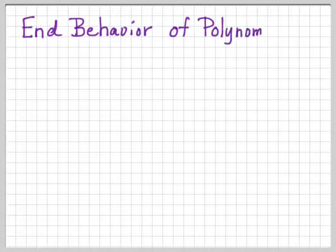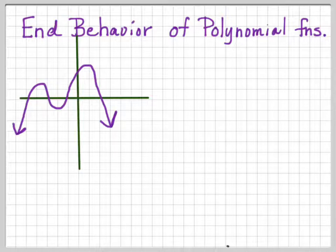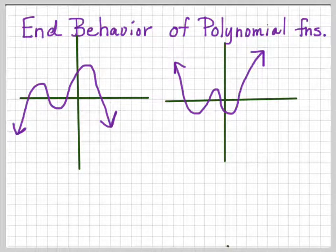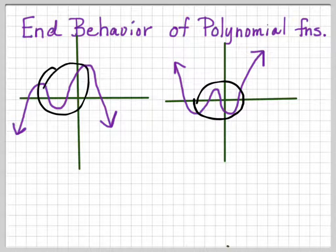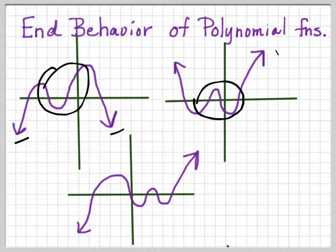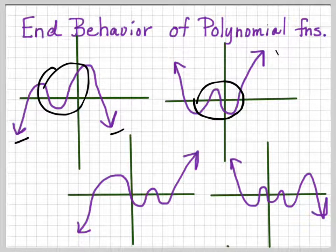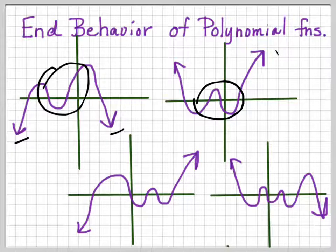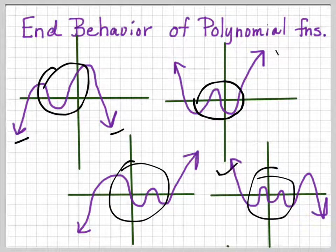Let's talk about the end behavior of the polynomial — that's where the arrows are on the ends. In one case we have a function whose ends both point down. In another, we have a polynomial function whose ends both point up. What's in the center doesn't matter — we're only looking for the ends. We also have cases where the left end goes down and the right end goes up, and where the left end goes up and the right end goes down. So those are the four possibilities, and that's what we'll determine by looking at the equation.